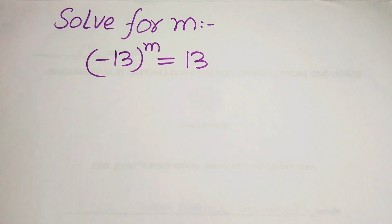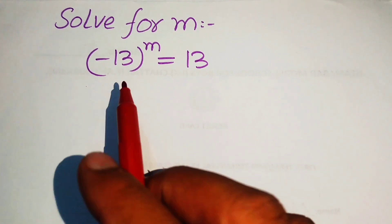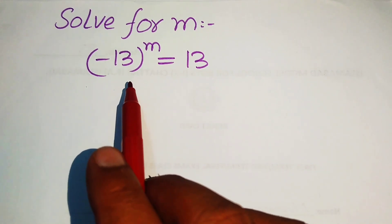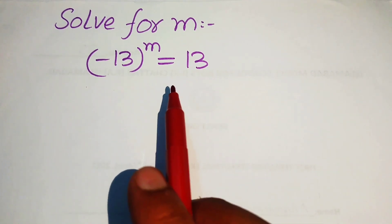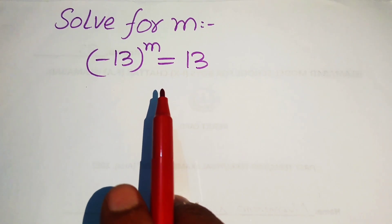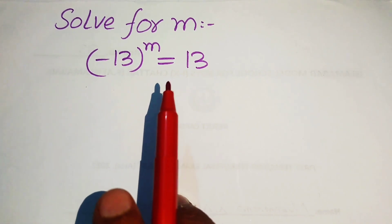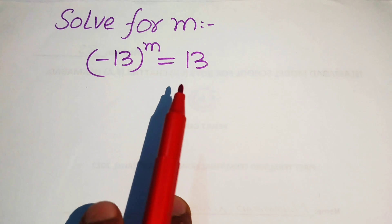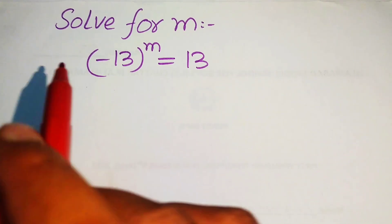Hello everyone, welcome. We are going to solve a Math Olympiad algebra problem — a nice exponential problem. The equation is (-13) to the power of m equals 13, and we will solve for the values of m using two methods.